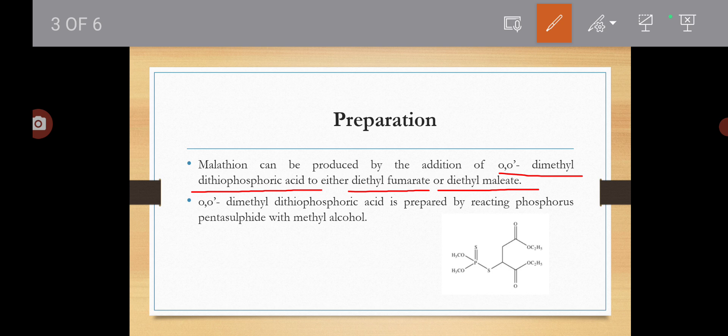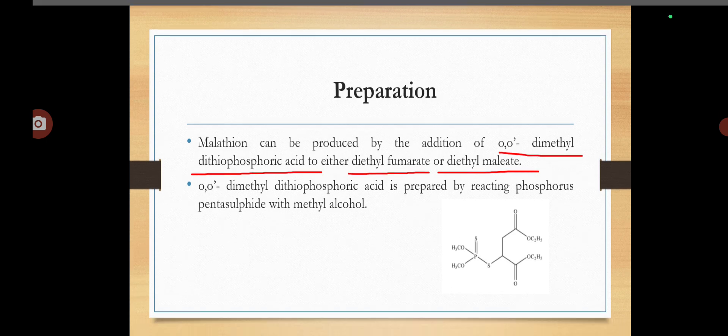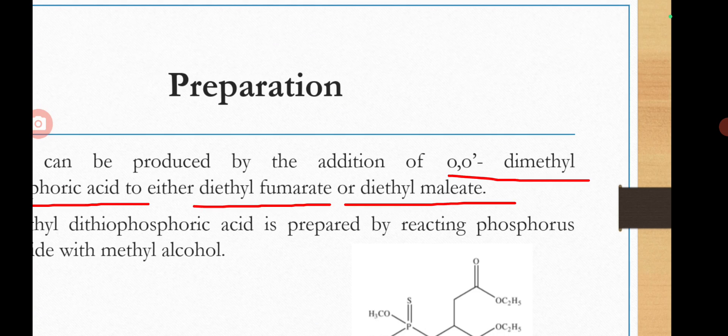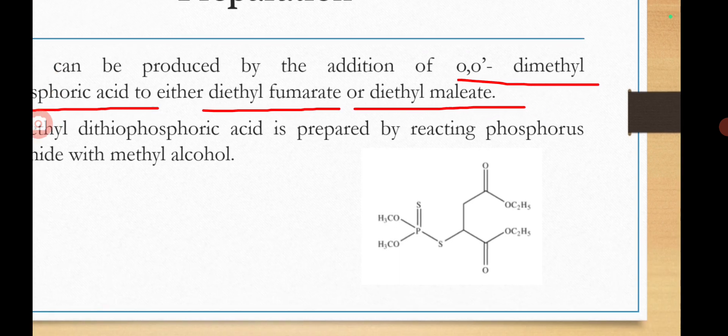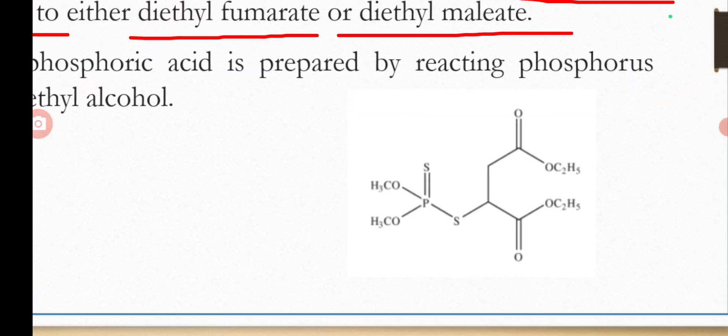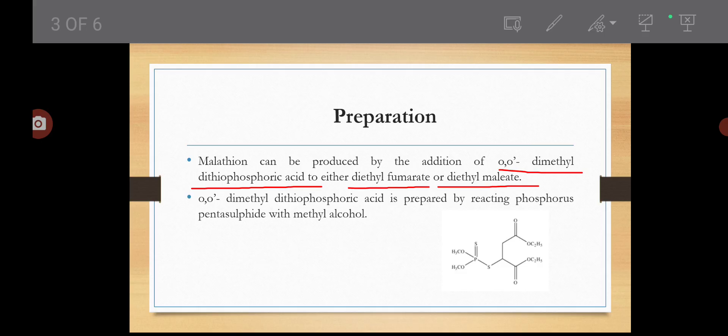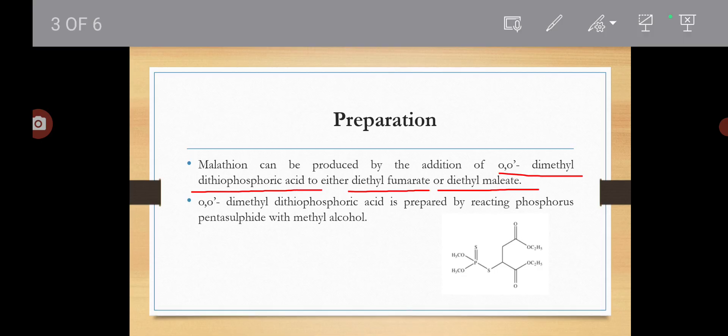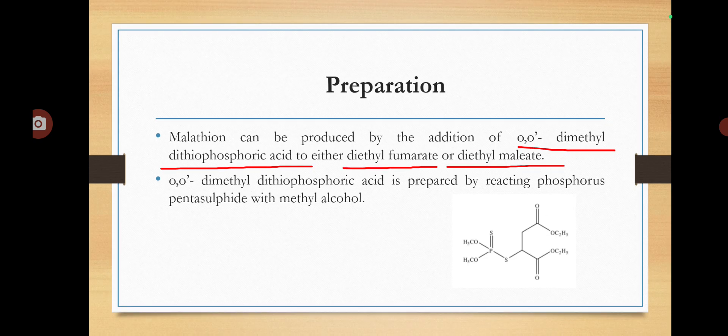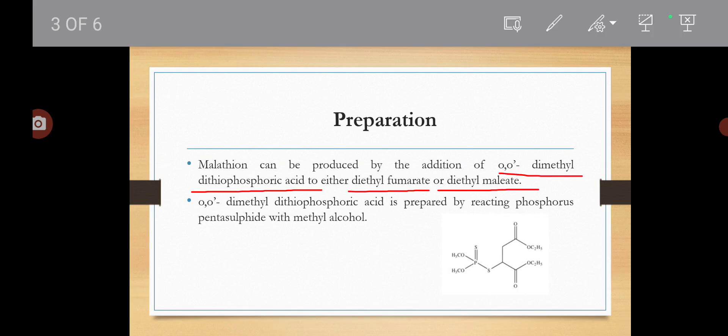Synthesis of Malathion: phosphorus pentasulfide की reaction methyl alcohol के साथ करनी है, तो आपका ortho-dimethyl dithiophosphoric acid बन जाएगा। फिर उसके बाद इसकी reaction करनी है with diethyl maleate या fumarate — तो यह आपका Malathion है। Malathion में यह phosphoric acid होता है।